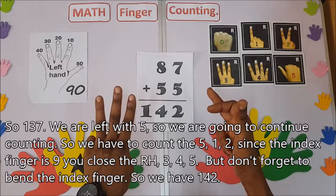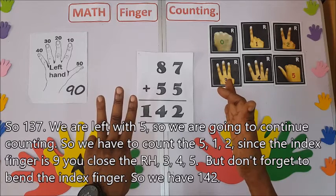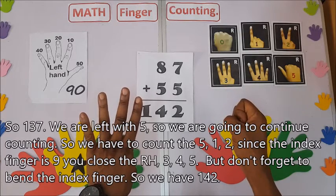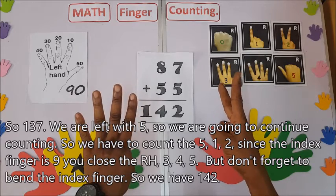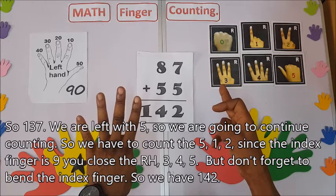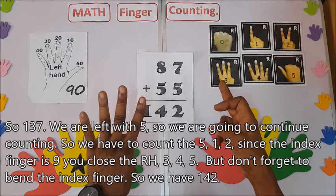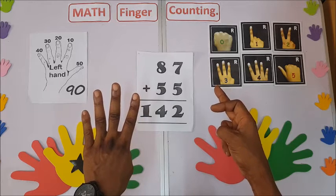On counting, so we have, you have to count the five. One, two. Since here is nine, you close here. Three, four, five. But don't forget to bend this one, so we have 142.